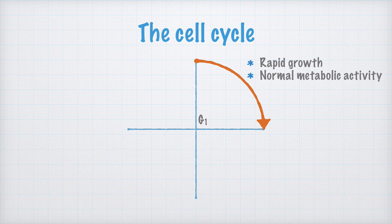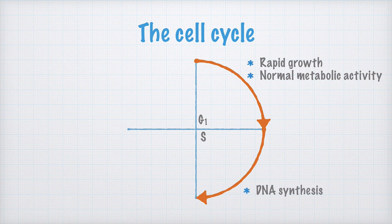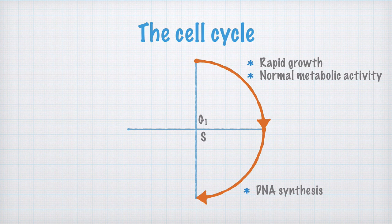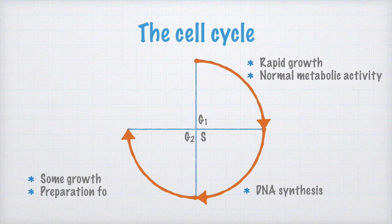When the cell is about to divide, it exits the G1 phase and enters the S phase. The S here stands for synthesis of DNA, which means that during the S phase, the DNA molecule or DNA molecules replicate. When all the DNA has been copied, the cell enters another gap phase, G2, in which there is some additional growth and preparation for mitosis.